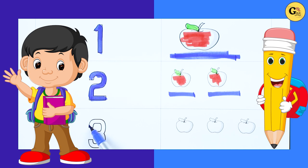Number 3. So we want 3 apples here. It's 3. 1 apple, 2 apples, 3 apples.